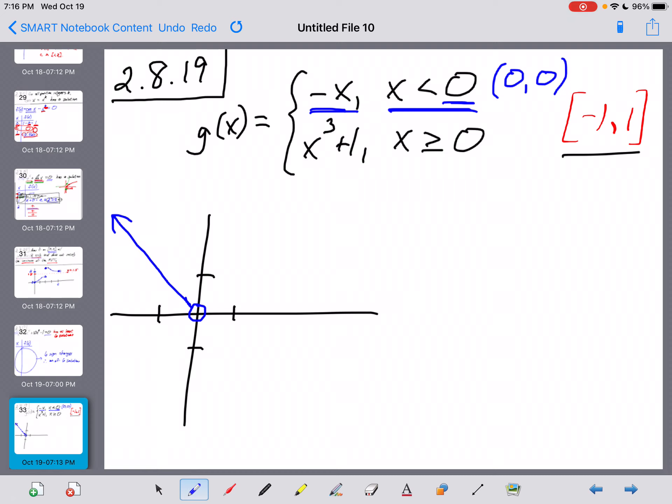Now we pick up the next part of the function here. And when x is greater than or equal to zero, we follow this rule. So I'll go ahead and put a zero in here. Zero cubed is zero plus one is one. The second part of this graph starts at the point zero, one. And because it's greater than or equal to, this one's going to be a closed dot right there. And then from there, x cubed plus one is just a cubic function shifted up one unit. So it's going to look something like that.